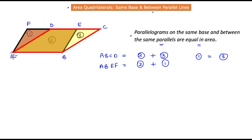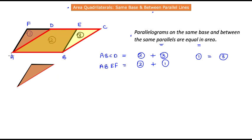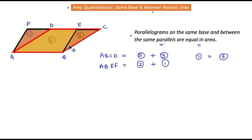Let us select the area of triangle ADF, copy it, and see if we can make a replica. We then move that replica to check if it superimposes on triangle BCE. As we move triangle ADF, it superimposes with 100% accuracy on triangle BCE. This visually proves that triangle 1 area equals triangle 3 area.